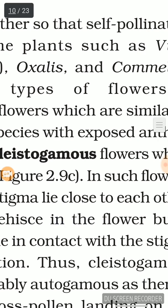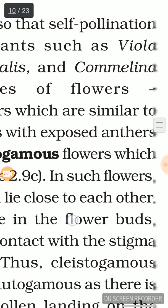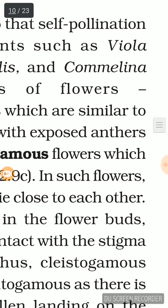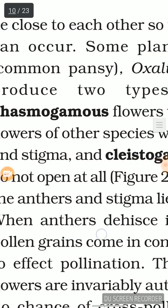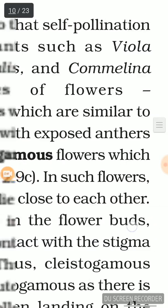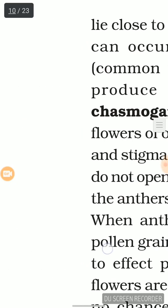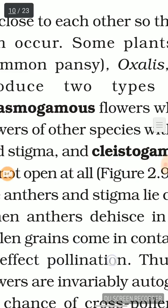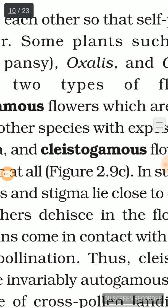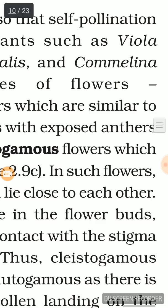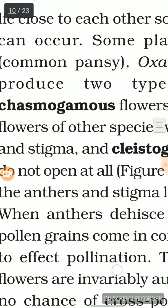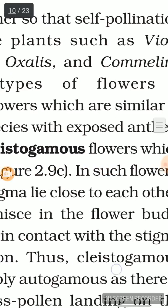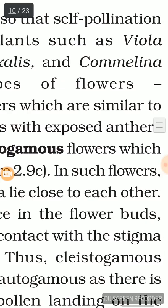The second type are cleistogamous flowers, which do not open at all and remain closed. In such flowers the anthers and stigma lie close to each other. When the anthers dehisce inside the flower bud, pollen grains come in contact with the stigma to effect pollination.